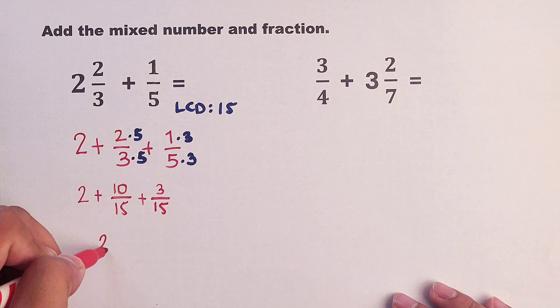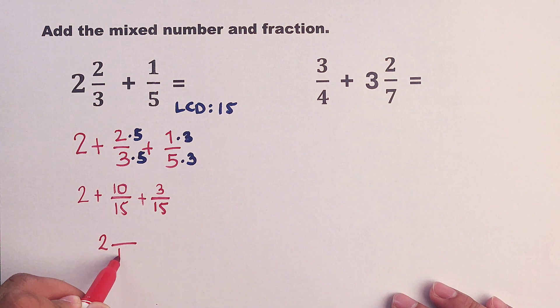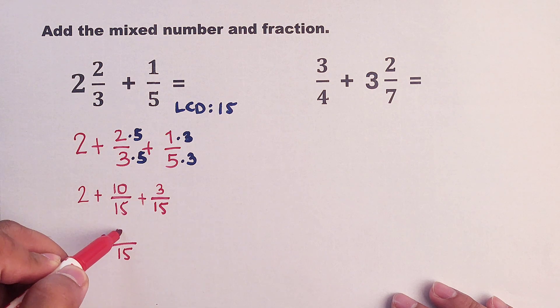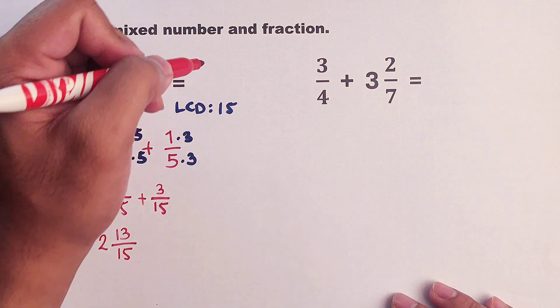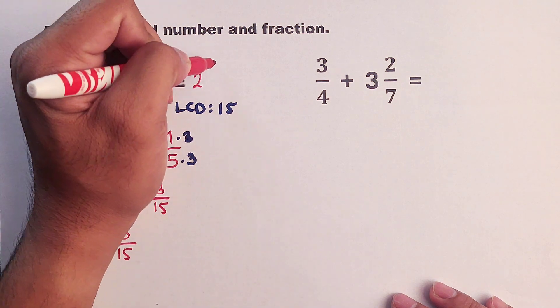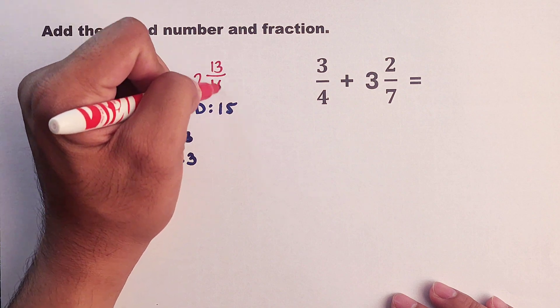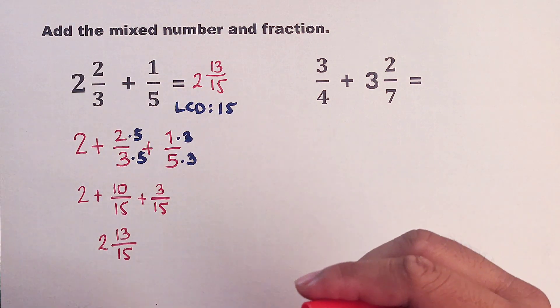We have 2, then add these fractions. Copy your denominator, 15, then 10 plus 3 which is equal to 13. And as you can see, the correct answer is 2 and 13 over 15. As simple as that.